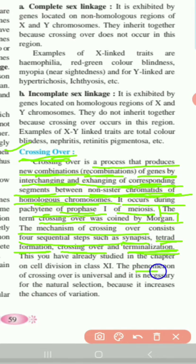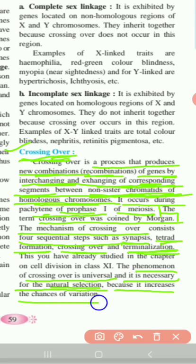The phenomenon of crossing over is universal and is necessary for natural selection, because it increases the chances of variation. Through variation, evolution occurs and new species are formed. These variations arising within a species through crossing over are gradually responsible for the evolution of that species.